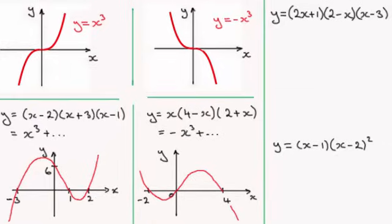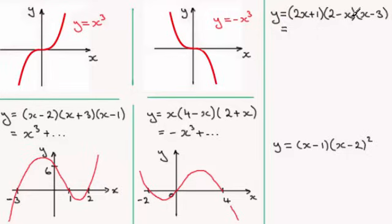Welcome back. For this first practice graph, let's find the x cubed term. We have 2x times minus x times x — so 2x times minus x gives minus 2x squared, times x gives minus 2x cubed. There will be other terms as well, but we've got a negative x cubed graph, so we know it's going to come downward from the left.